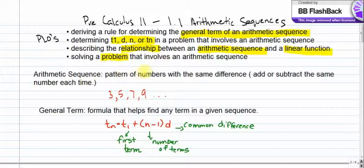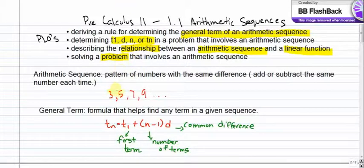Let's have a look at the first example. An arithmetic sequence is basically a pattern of numbers where the difference is the same all the time. That basically means you add or subtract the same number in the pattern. So for this one, we have 3, 5, 7, and 9 — we add 2 each time, which makes it an arithmetic sequence.